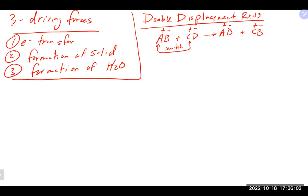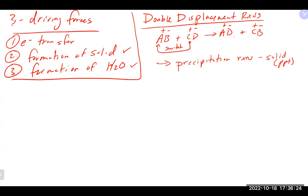Double displacement reactions cover two specific sub-types. One is a precipitation reaction, which means some type of solid or precipitate has been formed. Based on solubility rules, when certain ions come together, they make some type of solid.